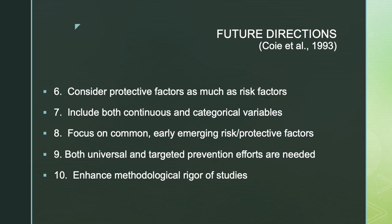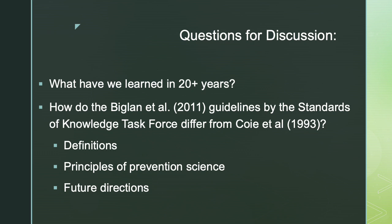Lastly, Coe et al. suggest as a future direction that we enhance the methodological rigor of our studies — paying attention to possible confounds, looking carefully at how we're recruiting participants, and minimizing type 1 and type 2 errors. With that quick summary, the discussion questions for Wednesday will be: what do we think we've learned in the past 20 plus years? How do the guidelines from the Biglan et al. task force on standards of knowledge differ from what Coe et al. suggested? Let's think about possible differences in definitions, concepts, the principles of prevention science, and in the future directions. The next lecture will be a brief one on the professional skills associated with being part of a professional task force.